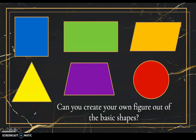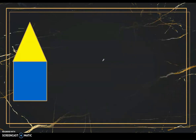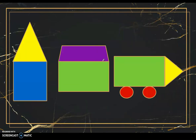Good day everyone. Let's start our lesson by creating our own figure out of the basic shapes given here. Not all geometric figures are simple polygons or circles — in some cases a geometric figure may be composed of different figures. Triangles, circles, and quadrilaterals may be combined to form a more complex geometric figure. Figures that are combinations of two or more figures are called composite figures, and that is our topic for today.